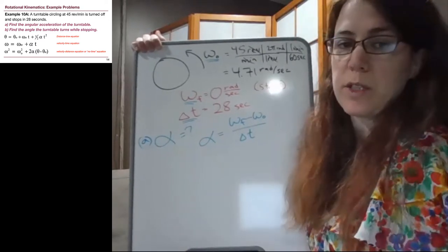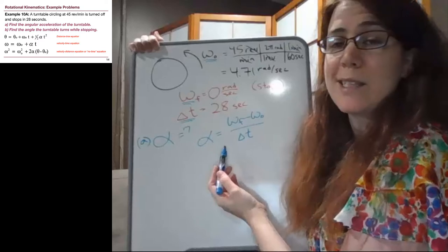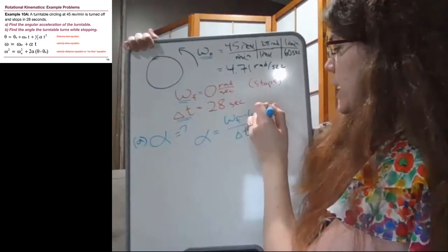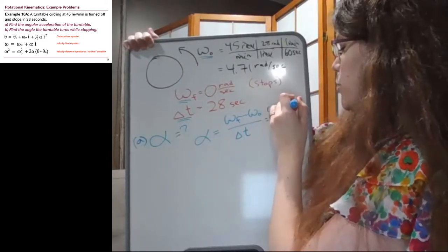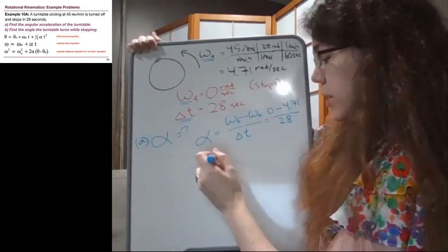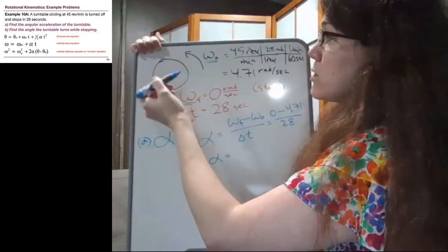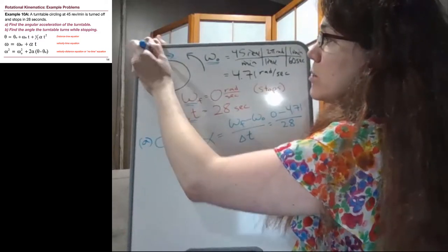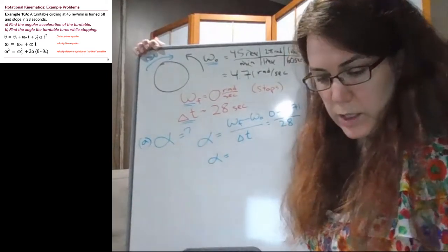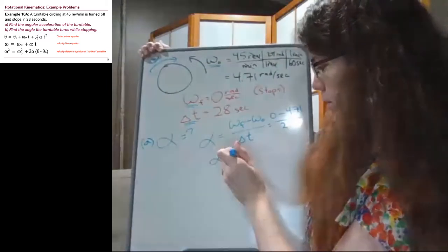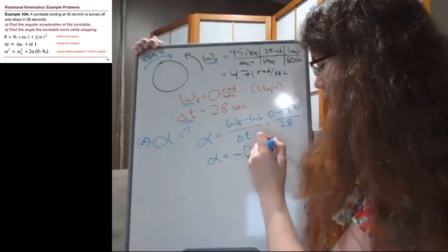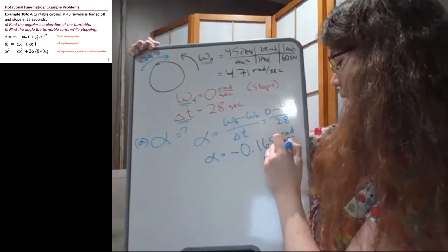And not necessarily one of these three equations, although this fundamentally is the velocity time equation just reordered. So we have zero as the final minus 4.71 all over 28. Our number is going to come out negative, which makes sense because we are slowing down. So we are slowing down with an opposite direction.